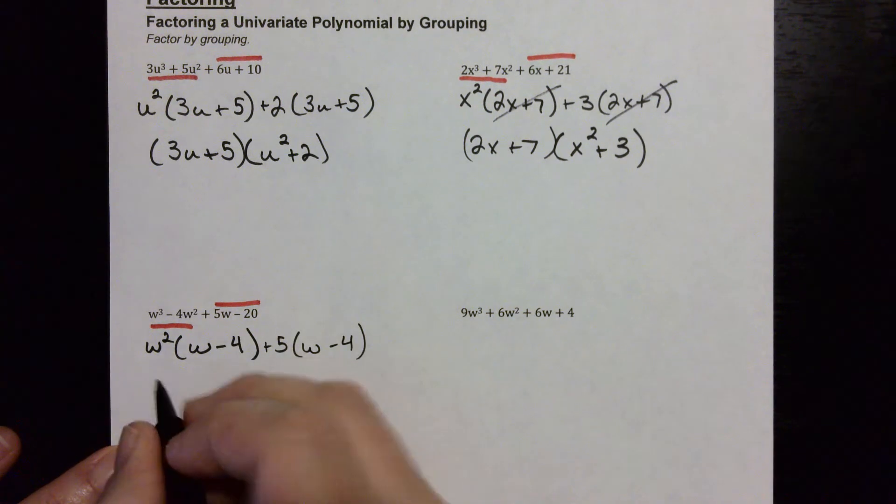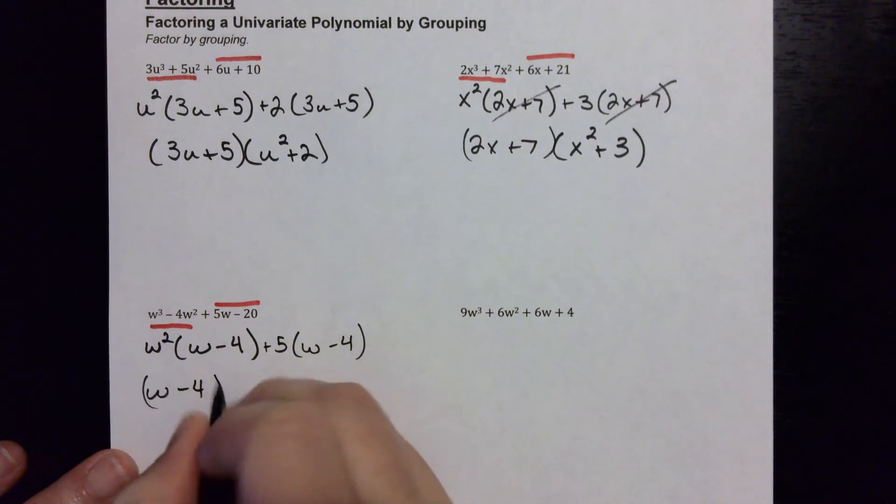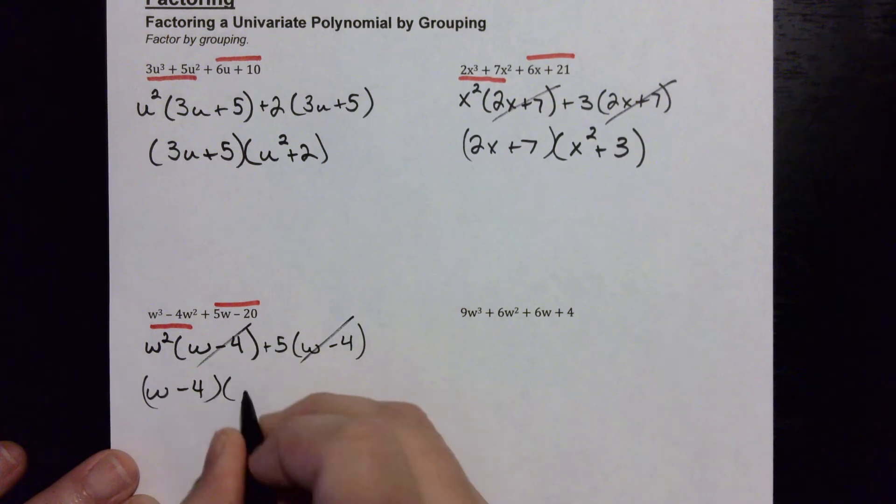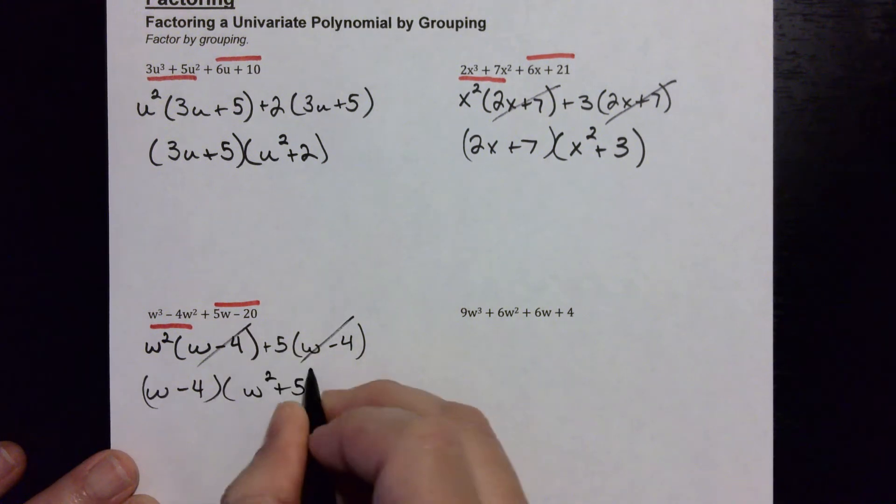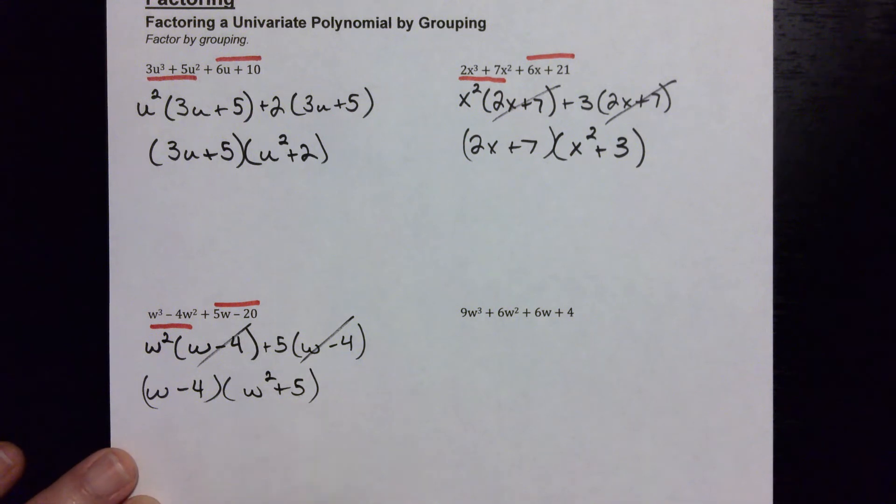Again, we have the same in the parentheses, so we can put that out front. And what's left is a w squared plus five. And again, all of these are turning out to be positive, but if this was a minus, this could be factored further using a difference of squares, but this is not a difference of squares because it's a plus.